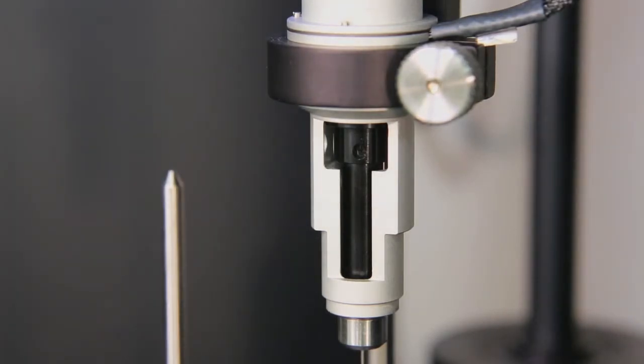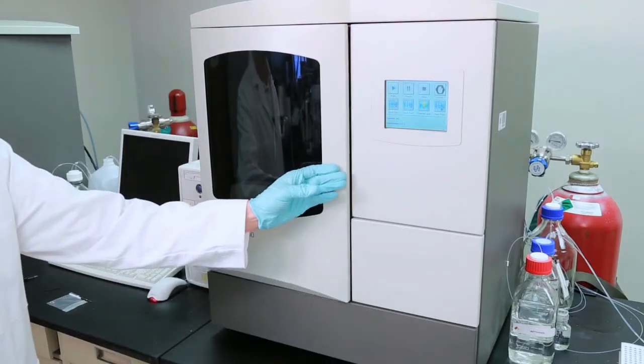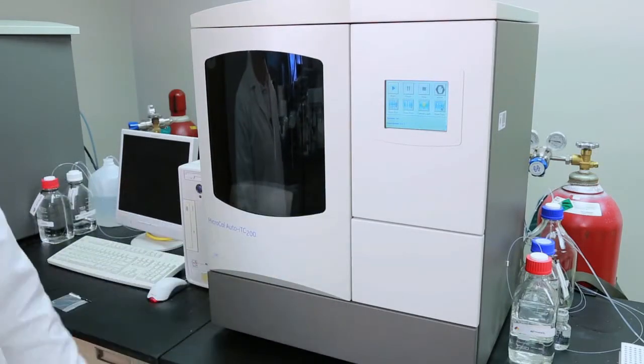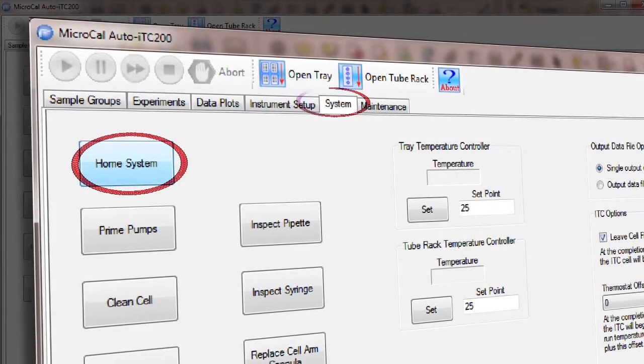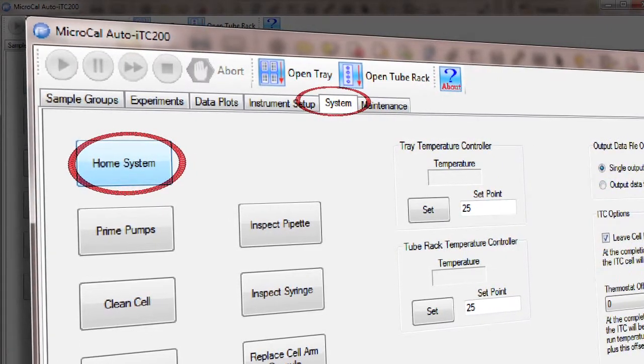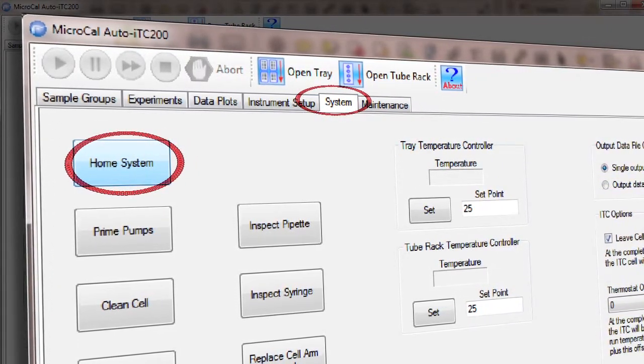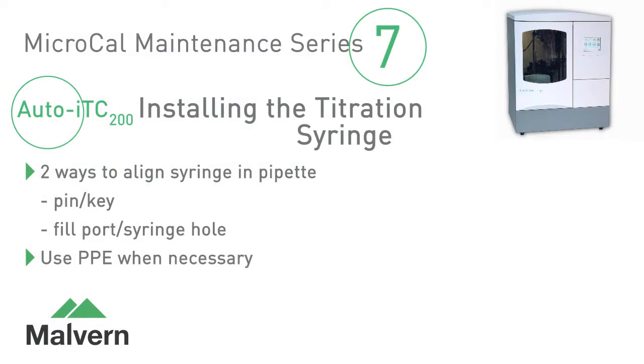As with any maintenance operation, the last step should be to close the door and home the instrument from the system tab of the AutoITC 200 software.